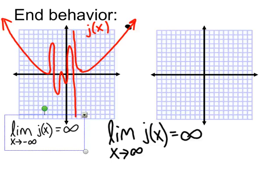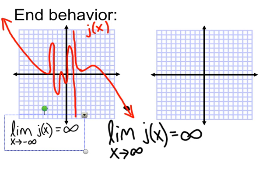Now let's just say that the graph did not do that. Let's say that the function instead went downward so that our point as x goes to positive infinity, as x gets bigger and bigger, what's happening to the y value? Well, that changed things, didn't it? Now the y value is approaching negative infinity. One more time — this is what's happening to x, and this tells us what's happening to the y value at that same time.